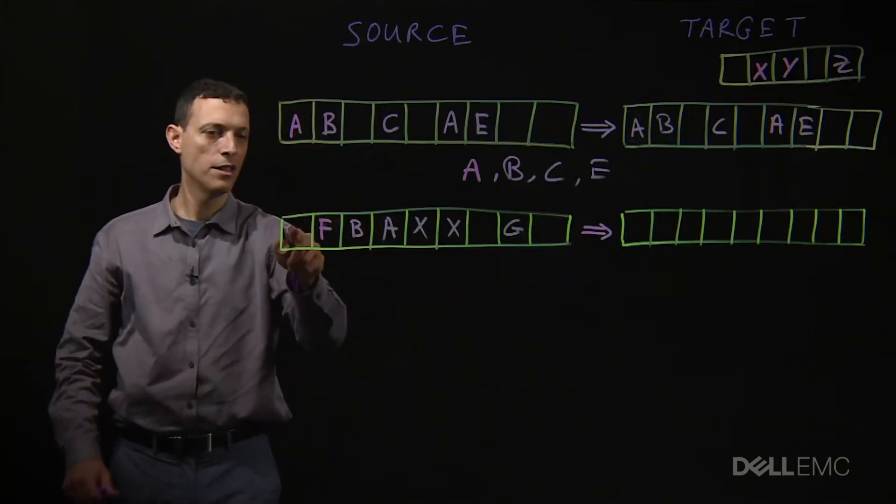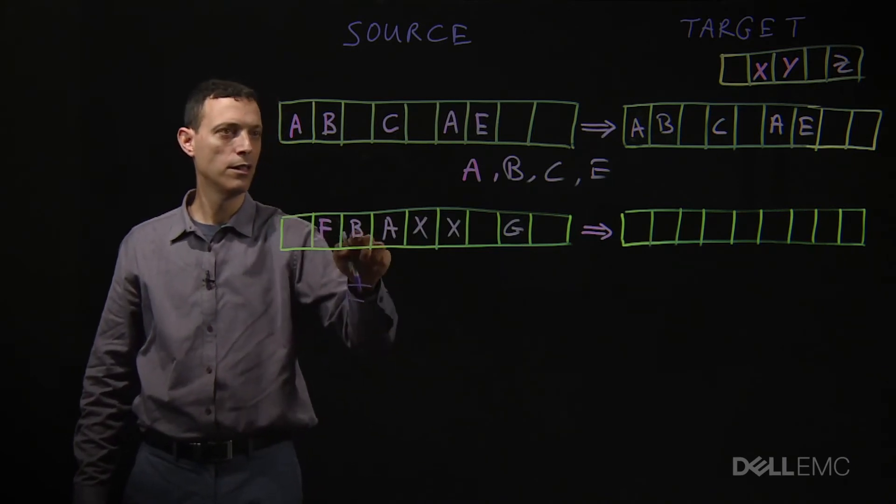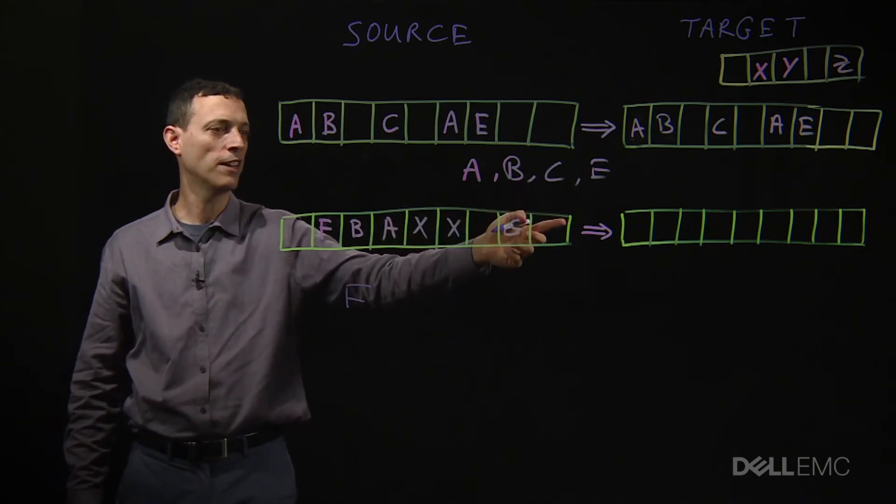Let's see what we need to transmit. Nothing changed here. F is new. B is already on the target cluster. A is already on the target cluster.